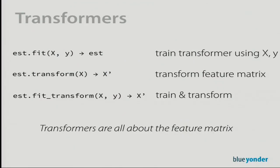Scikit-learn has a concept for ensuring consistent transformation: the transformer. A transformer is an object with a `fit` step and a `transform` step — we train it with `fit`, transform data with `transform`, and there's a shortcut `fit_transform` that does both at once. Importantly, `transform` returns a modified version of our feature matrix X, and during `fit` it can also see Y.